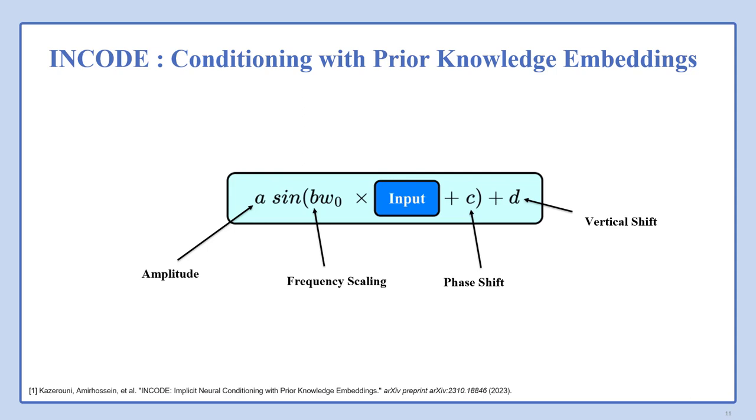Our activation function is a modified sine-based activation function. A represents amplitude, B represents frequency scaling, C denotes phase shift, and D represents vertical shift.